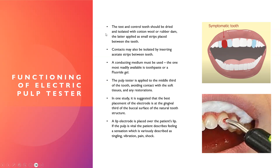The test and control teeth should be dried and isolated with cotton wool or rubber dam. The rubber dam can be cut into small strips placed between the teeth, or acetate strips — the same ones used for light-cure composite fillings — can be inserted between the teeth to isolate contact areas. A conducting medium must be used, such as toothpaste gel, fluoride gel, or electrocardiogram gel — whatever is convenient and readily available.